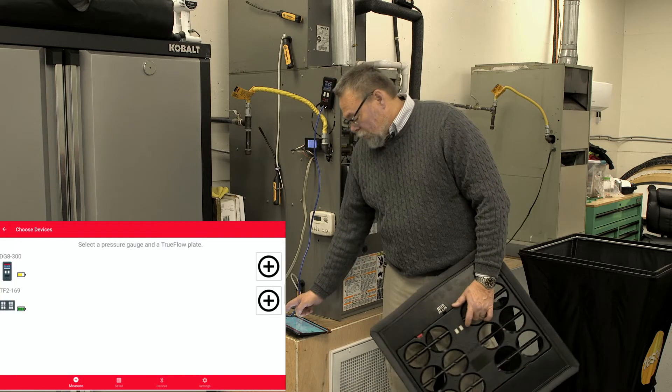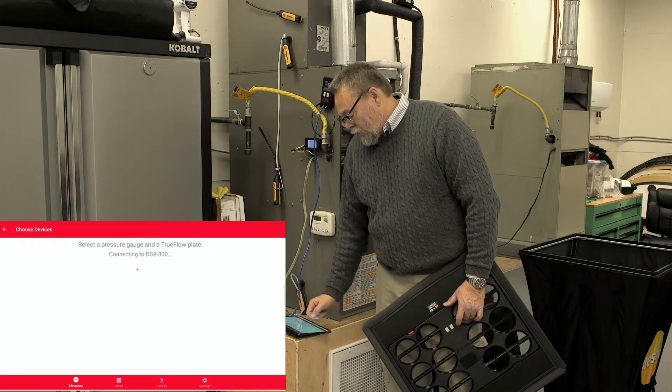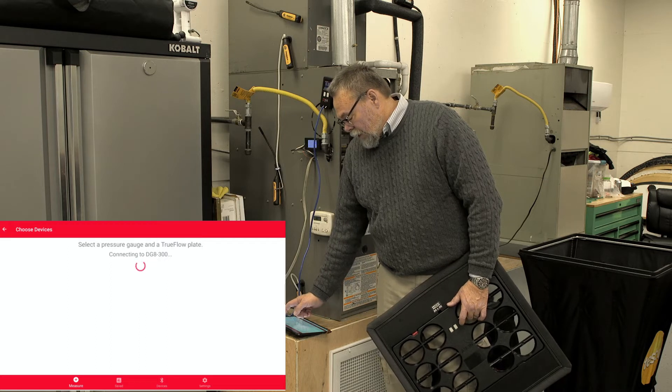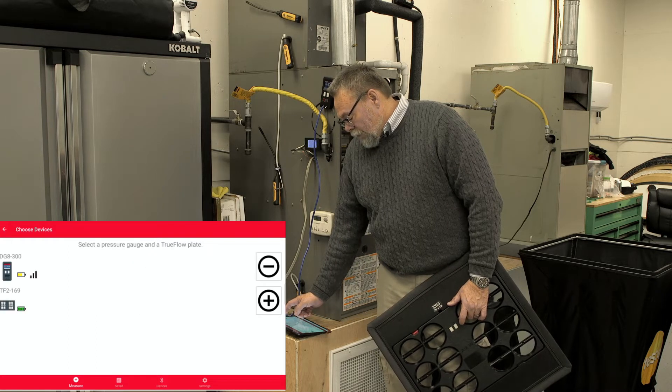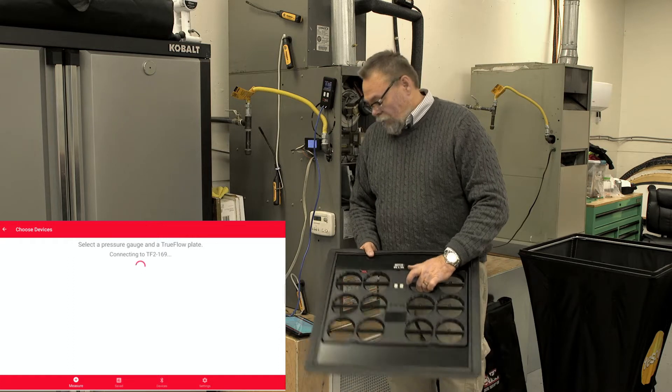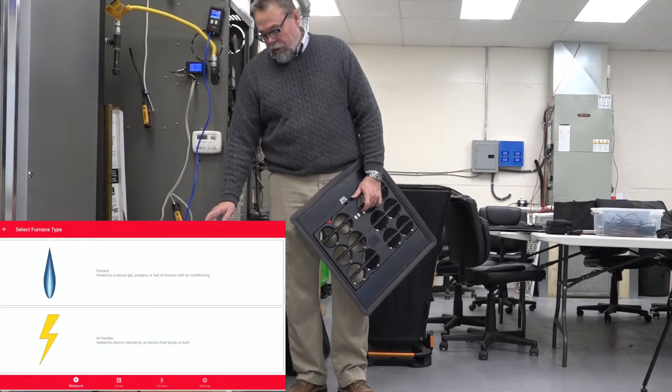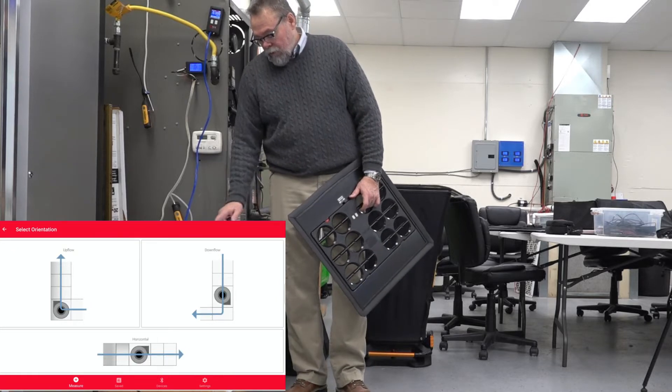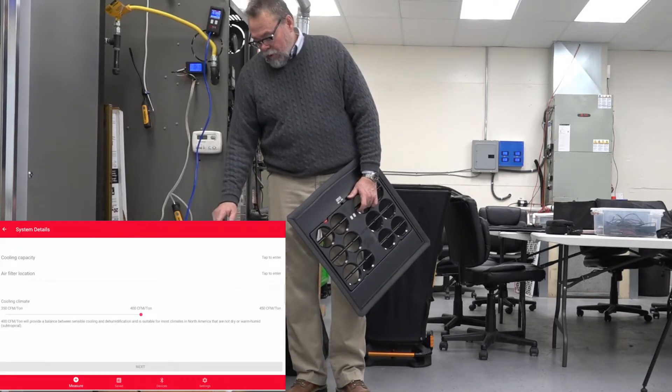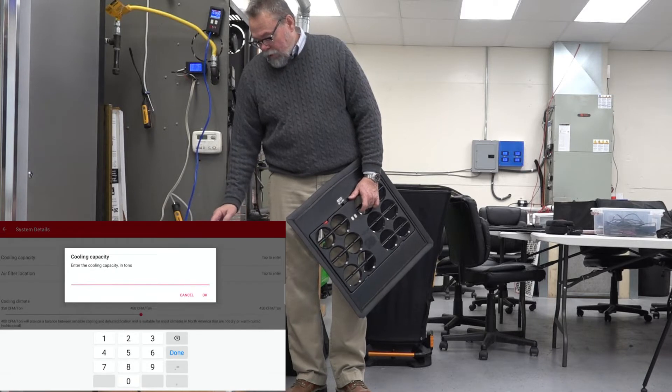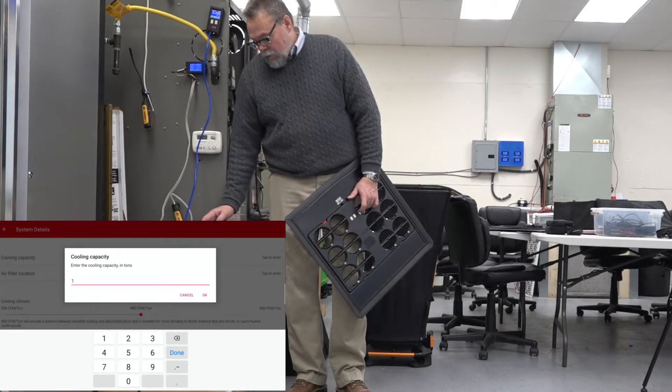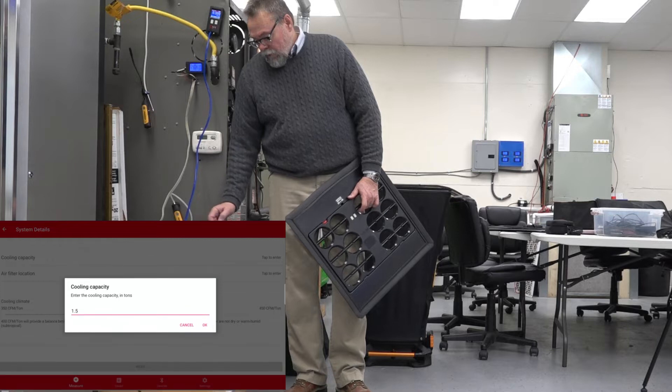It sees these tools, but they're not linked yet, so I add each of the tools, the DG8300, and then I'm going to link the flow grid itself. Once those are in there, I can move forward. Now I can do it. This is a gas furnace. It's an upflow, and we got cooling capacity is 1.5 tons.